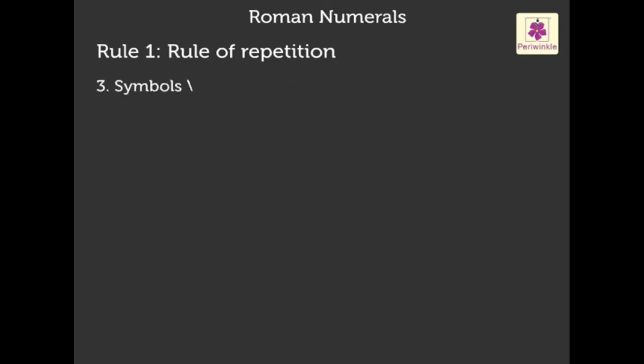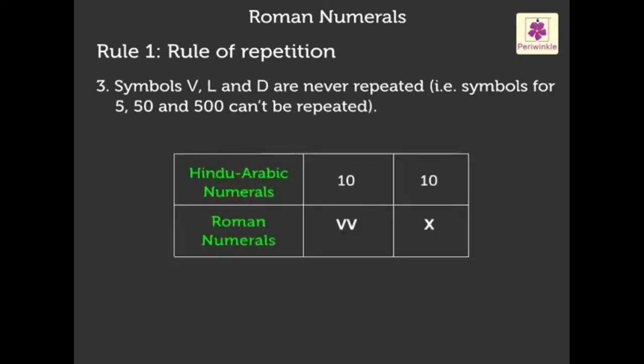Next rule: symbols V, L, and D are never repeated. That means symbols for 5, 50, and 500 cannot be repeated. For example, to represent 10 we cannot write VV; we write 10 as X in Roman numerals.